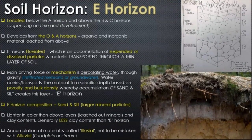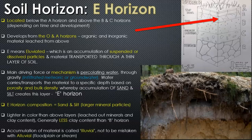The E horizon forms from the O and A being leached out through eluviation and percolation. The E stands for eluviation — it's an eluviated horizon. This layer is generally found below the A horizon and above the B horizon. It's just below the topsoil and is the first part of the subsoil. It forms when the A horizon becomes thinner and a thin, very bleached, light-colored layer develops — that's the E horizon.